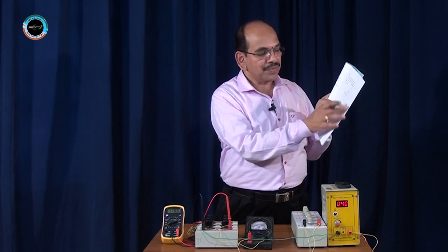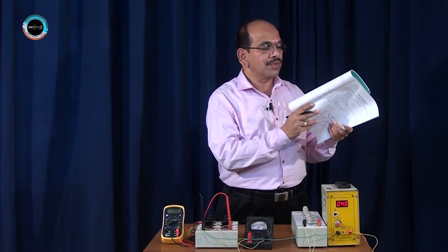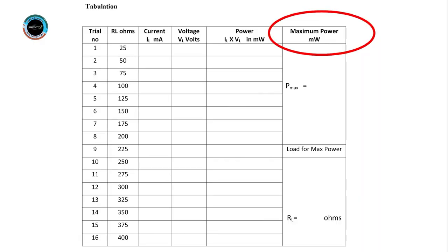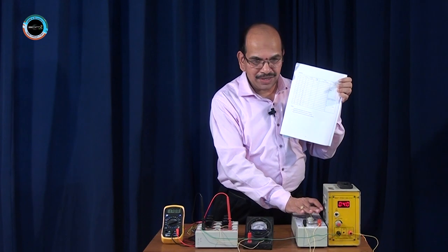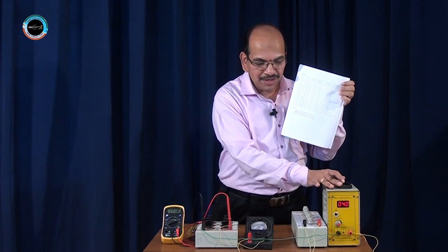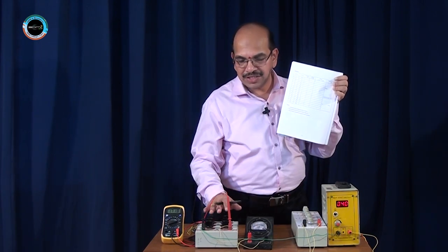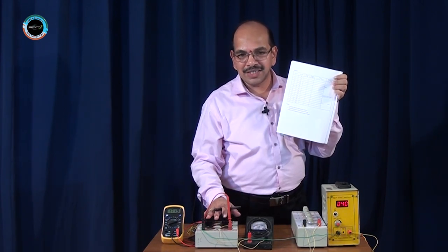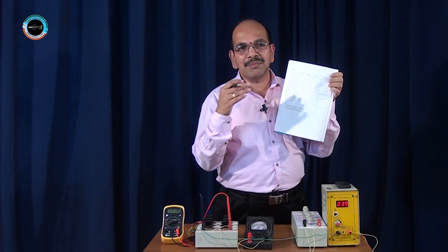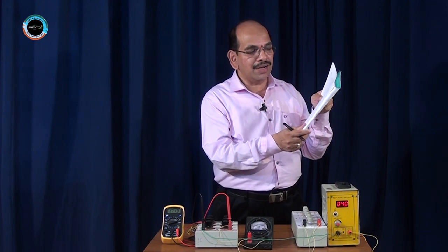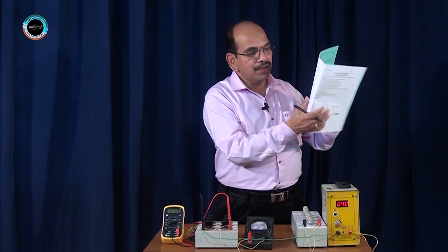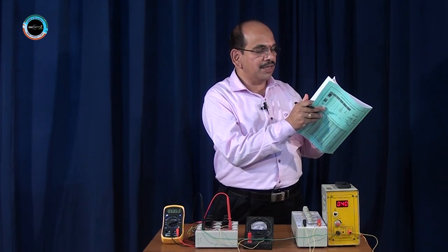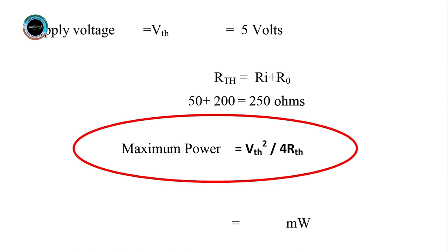We can calculate the power delivered, and this power will be equal to the maximum power delivered experimentally. On comparison of results, it will be seen that when the load resistance is nearly equal to 250 ohms — 200 ohms external plus 50 ohms internal — maximum power is delivered, and that maximum power equals the theoretical value given by Vth squared divided by 4Rth.